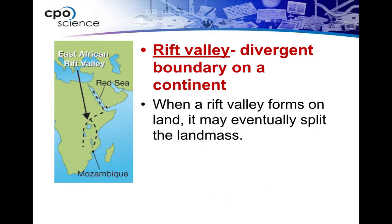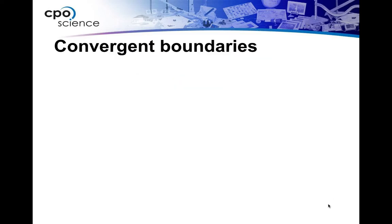Right where you see the Red Sea, those two land masses actually used to be connected to each other. They're opening up there, and that's where the water is filling in. So when this happens on land, we call those rift valleys.